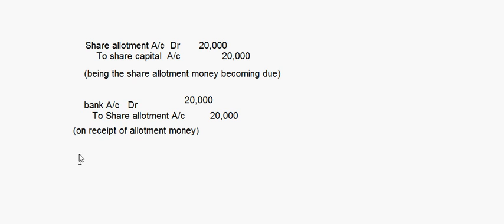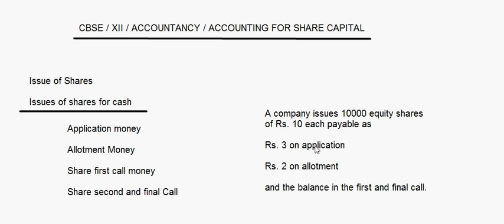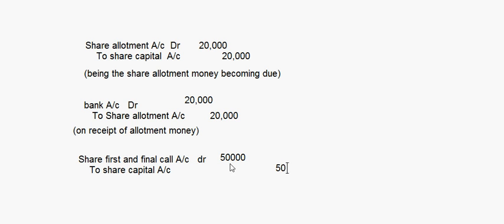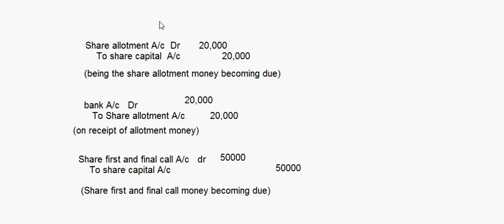When the first and final call money becomes due, the entry is: Share First and Final Call Account debit to Share Capital Account. The balance is ₹10 minus ₹3 minus ₹2, which is ₹5. So ₹5 called for on 10,000 shares gives ₹50,000 — share first and final call money becoming due. On receipt, the entry is: Bank Account debit to Share First and Final Call Account — ₹50,000.